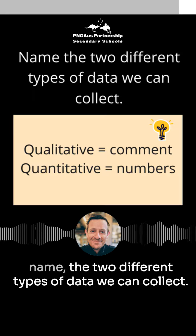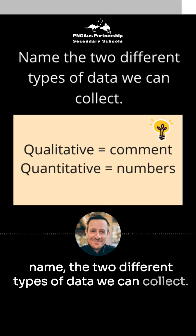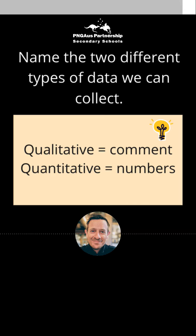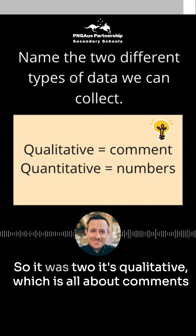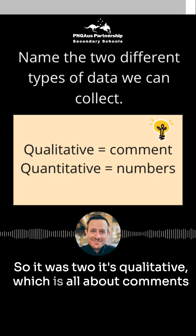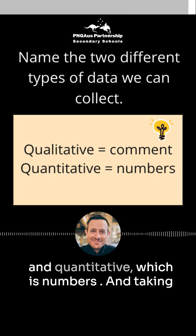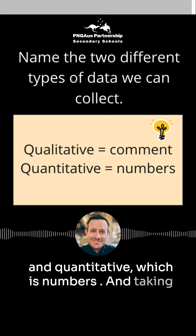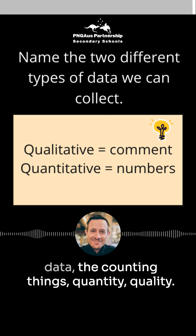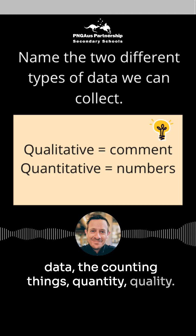Name the two different types of data we can collect. There are two: qualitative, which is all about comments, and quantitative, which is numbers. So when collecting data we're counting things — quantity and quality.